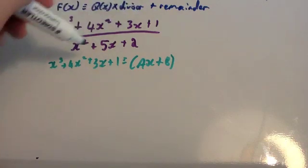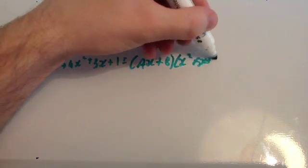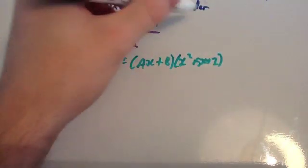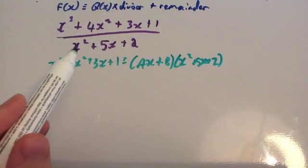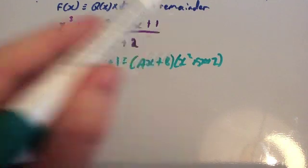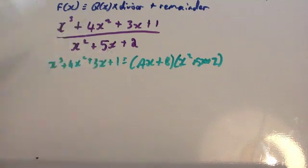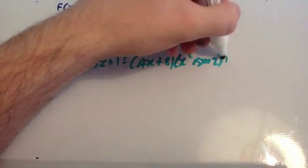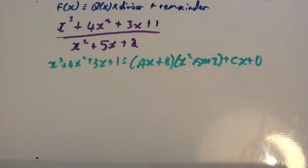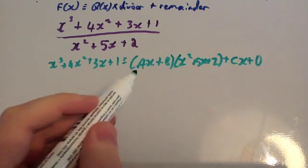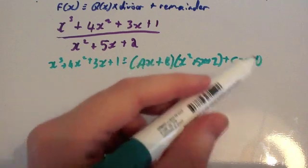Then you have times your divisor, which is x squared plus 5x plus 2, and then plus the remainder. The remainder is always one power less than the divisor. Since the divisor is x squared plus 5x plus 2, one power less than x squared is x. So the remainder is going to be cx plus d. Now let's work out what a, b, c, and d are. That will tell us the quotient and the remainder.